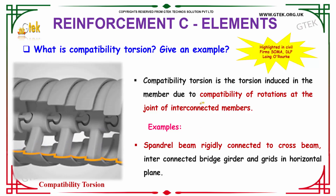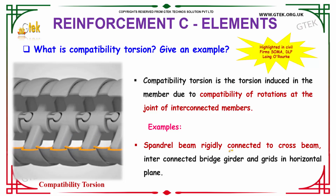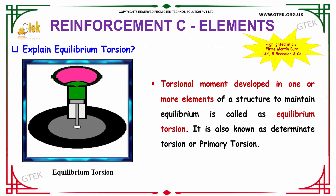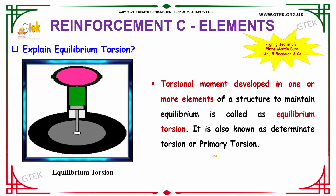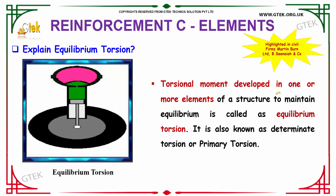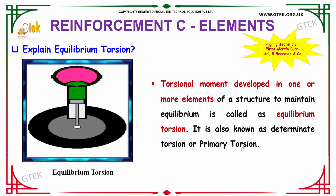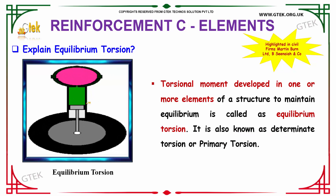Compatibility torsion is induced due to the rotations of the joints of interconnected members. Our next question is: explain equilibrium torsion. The torsional moment that is developed in one or more elements of a structure to maintain equilibrium is called equilibrium torsion. It is also known as determinate torsion or primary torsion.